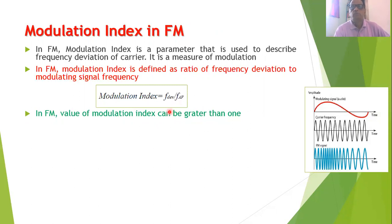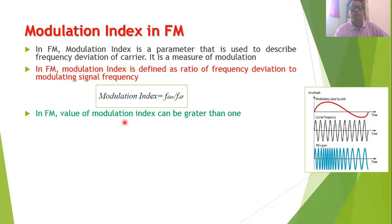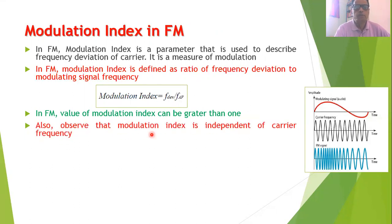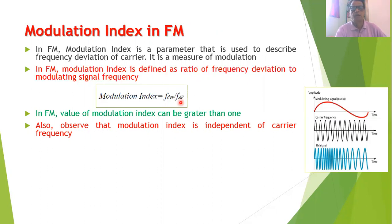In AM, the modulation index is in the range of 0 to 1, but in FM it is not necessary that the modulation index should always be in that range — it is possible that the value of modulation index can be even greater than 1. Also, the modulation index is independent of the carrier frequency; it depends only upon the frequency deviation and the modulating signal frequency.